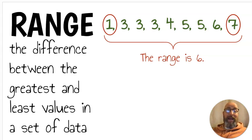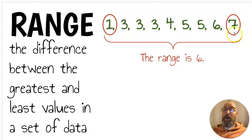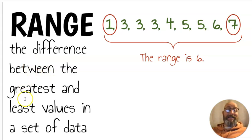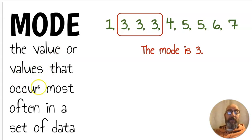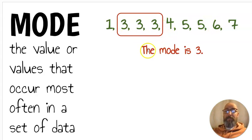Next we have the word range. The range is the difference between the greatest and least values in a set of data. Here I have a collection of numbers — the smallest number is one, the largest is seven, the distance between them is the range, which is six. Next we have mode. The mode is the value or values that occur most often in a set of data. In these numbers, three happens three times — more than any other number — so that makes it the mode.